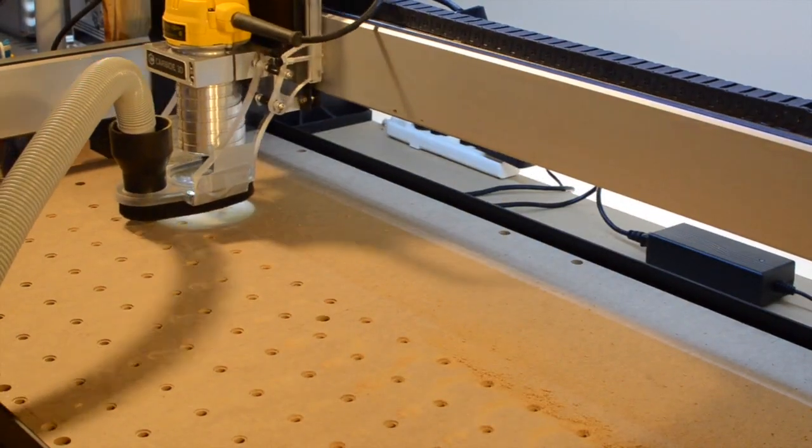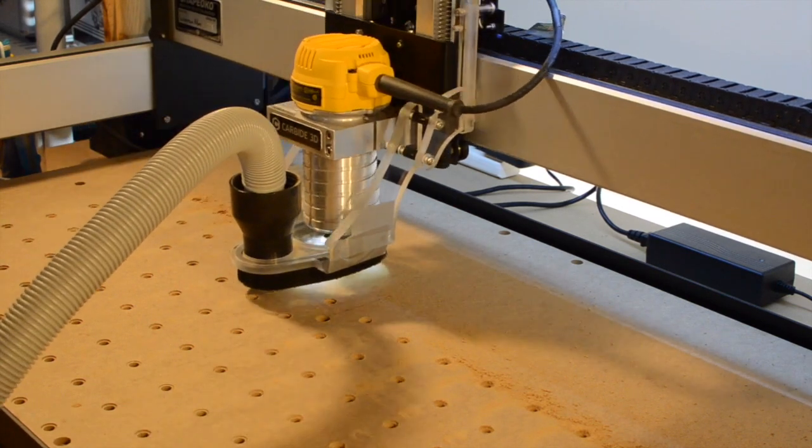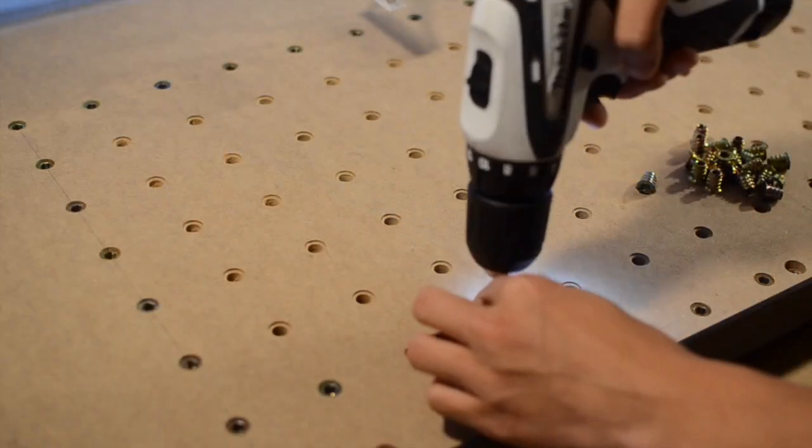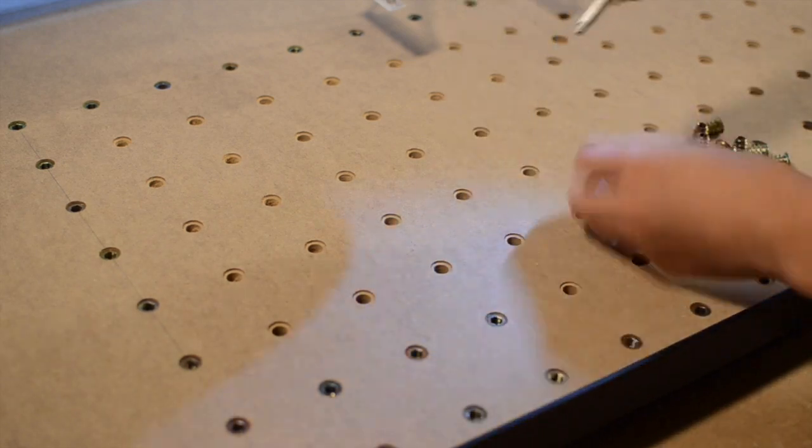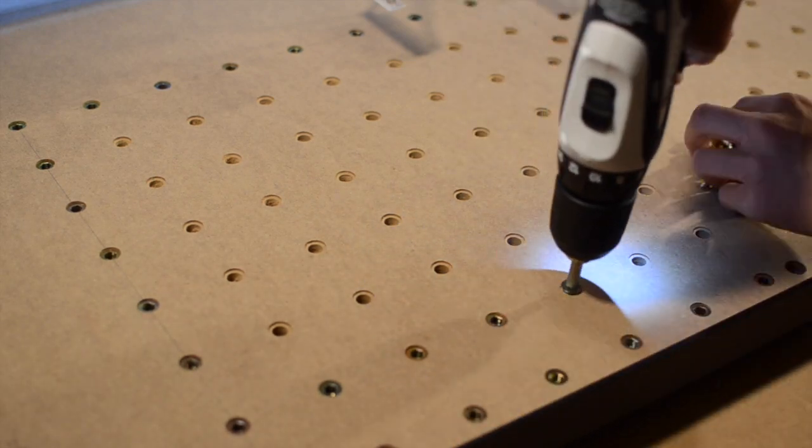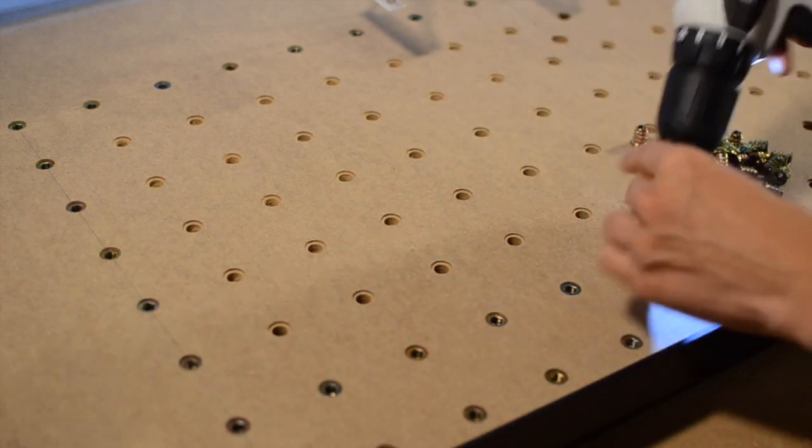After I finished putting in all 128 holes in my wasteboard, I reached for my stash of 1.25 threaded inserts. I figured out that a T40 head and a low torque setting on my drill would make easy work with the threaded inserts. It only took me a couple seconds per hole.